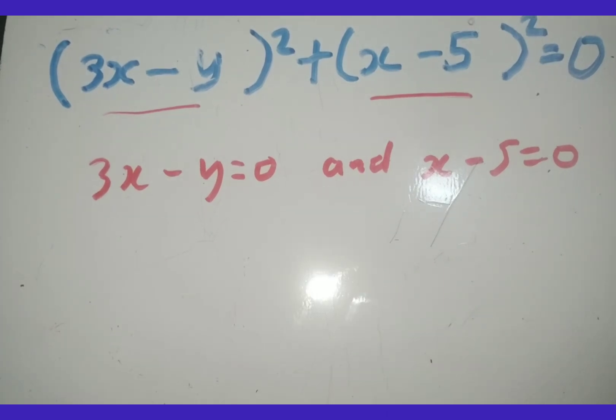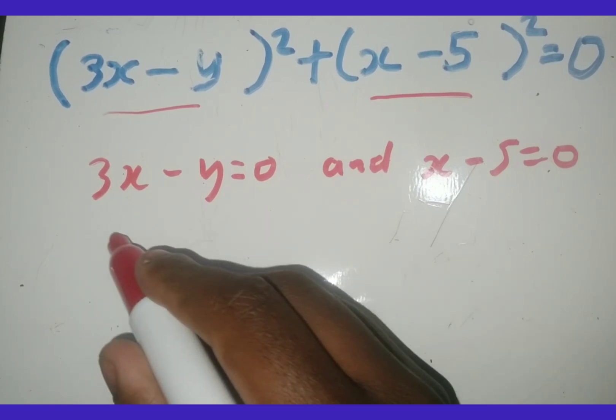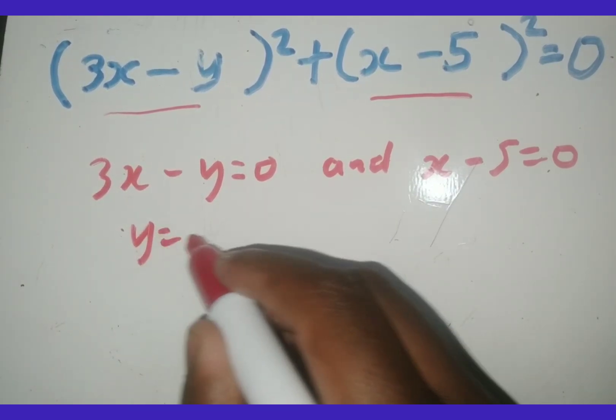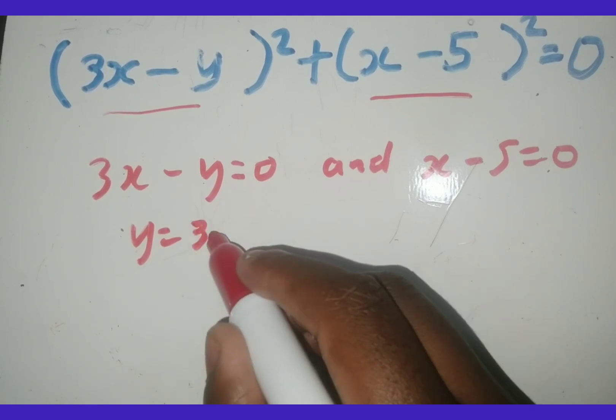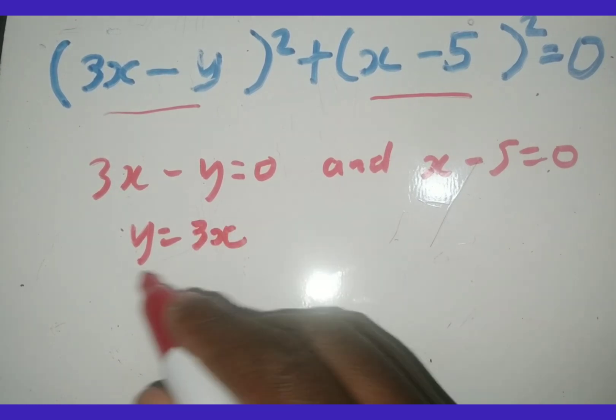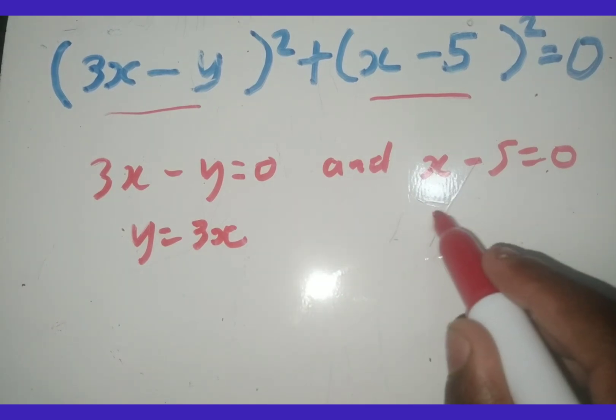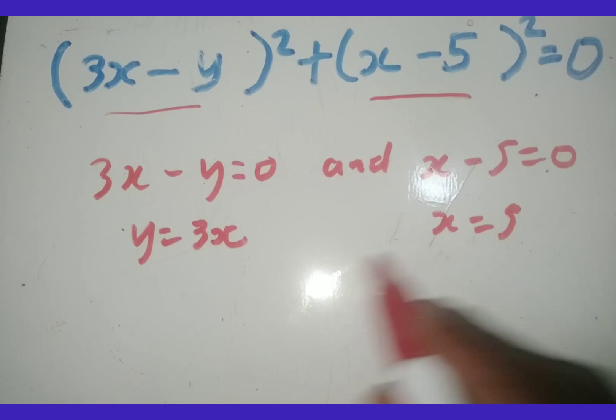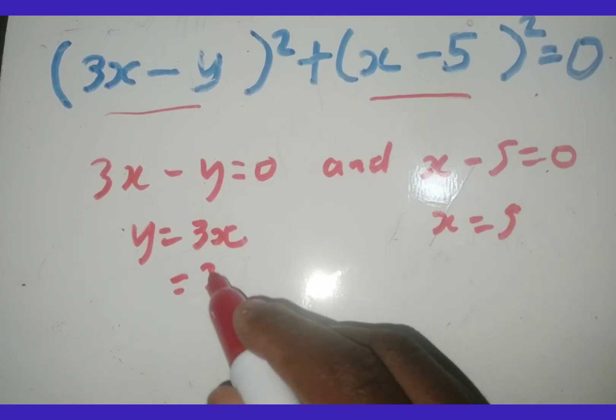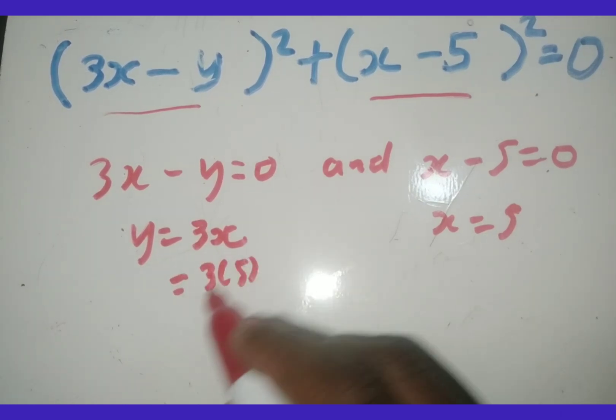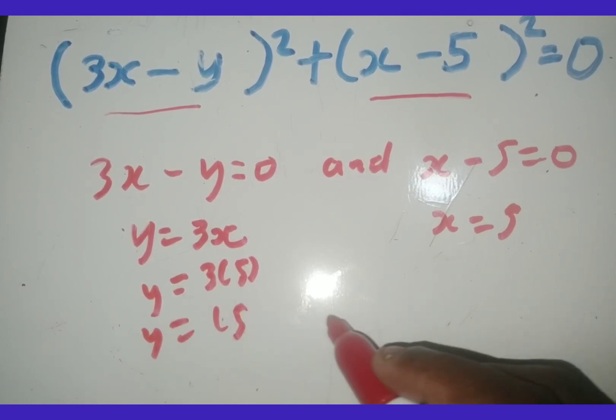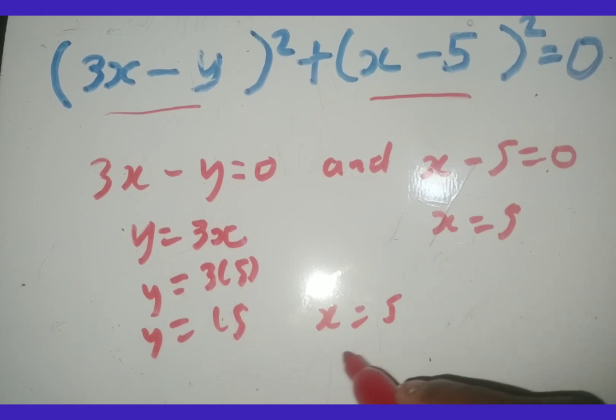So then therefore, it means that we can now say 3x = y or we can say y = 3x. So I made y the subject of the formula. Here, we figured out that x = 5. So we found x. So now to find y, it's going to be y = 3 × 5, which is just going to be 15. So therefore, we found it. We found that x = 5 and y = 15.